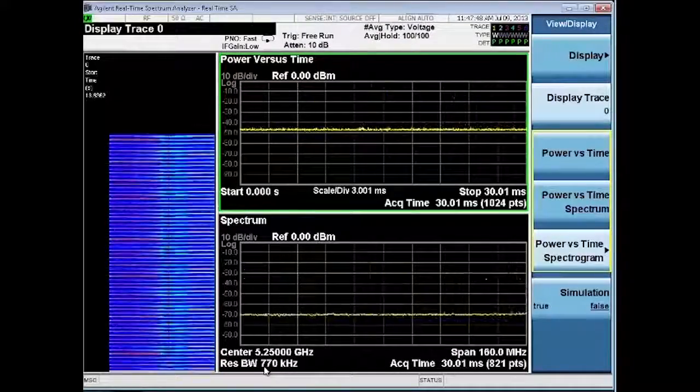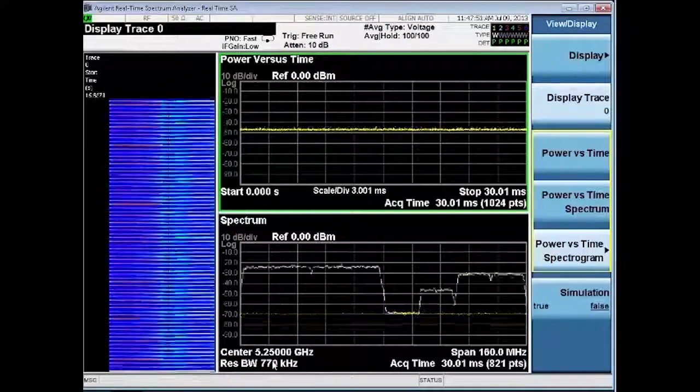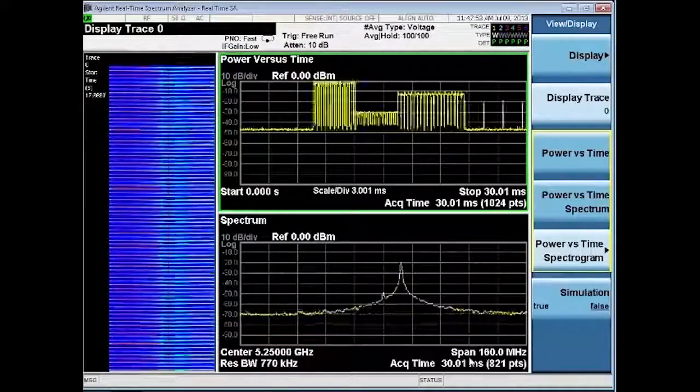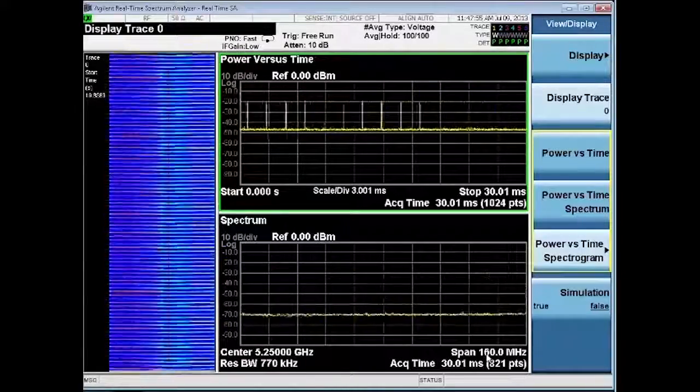In the power versus time display, we get an idea of what pulse repetition interval the signal is at, while simultaneously viewing the spectrum to see how other signals behave.